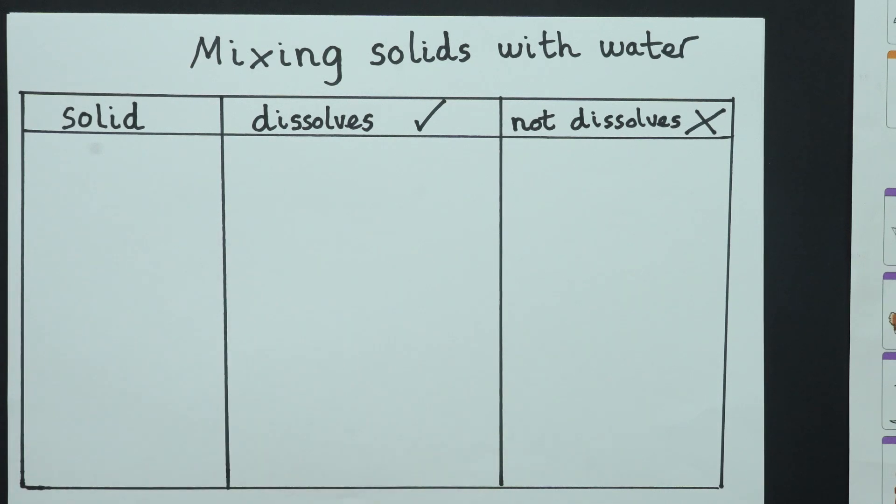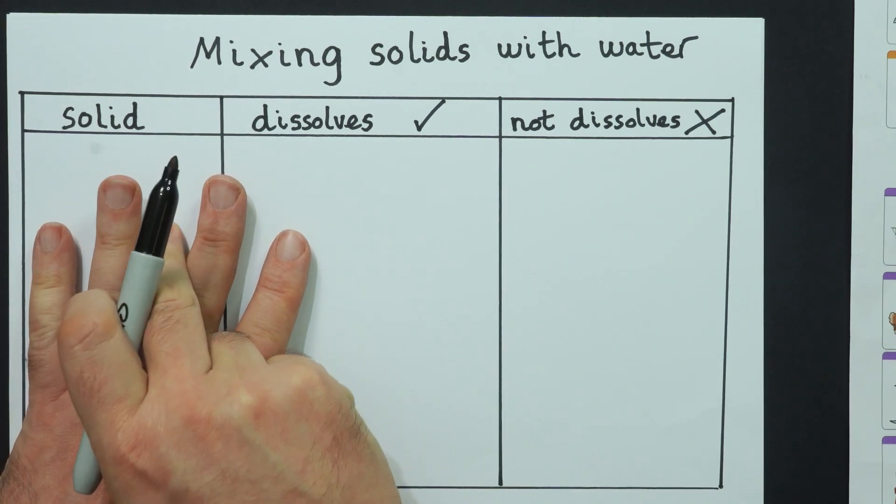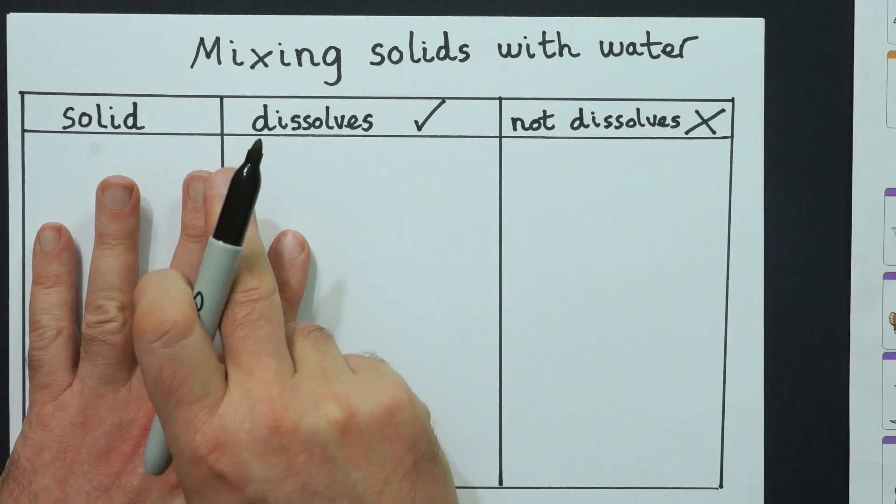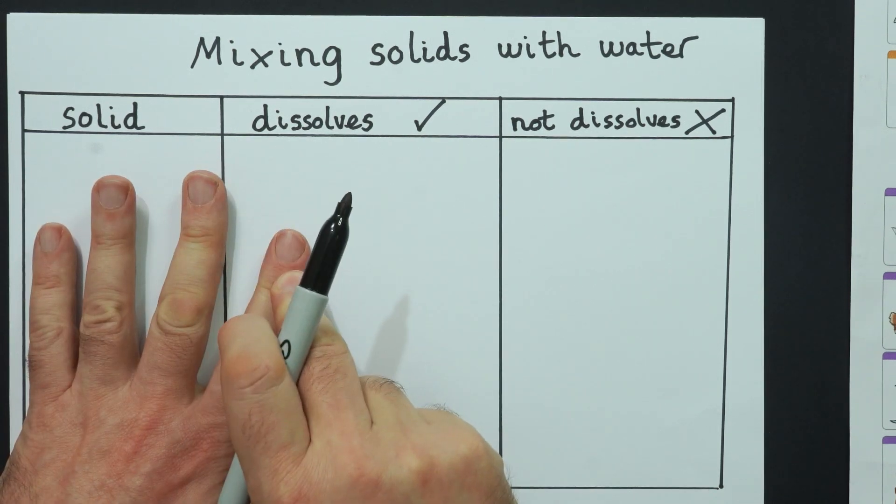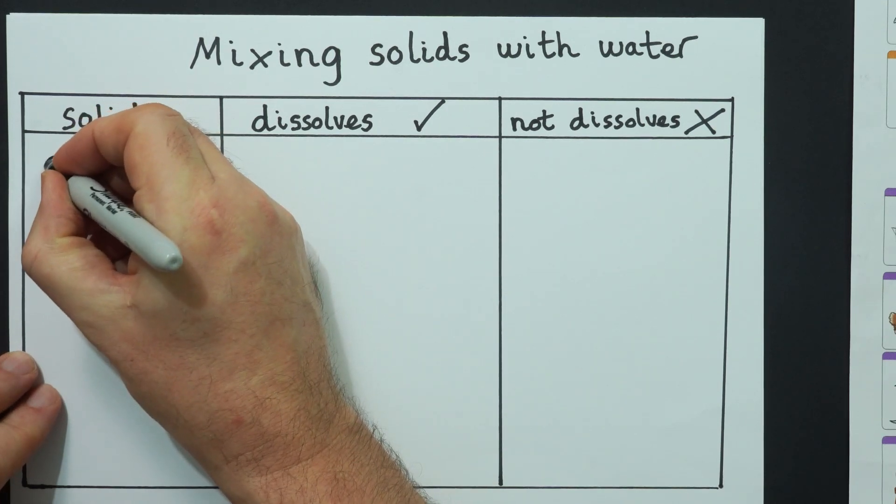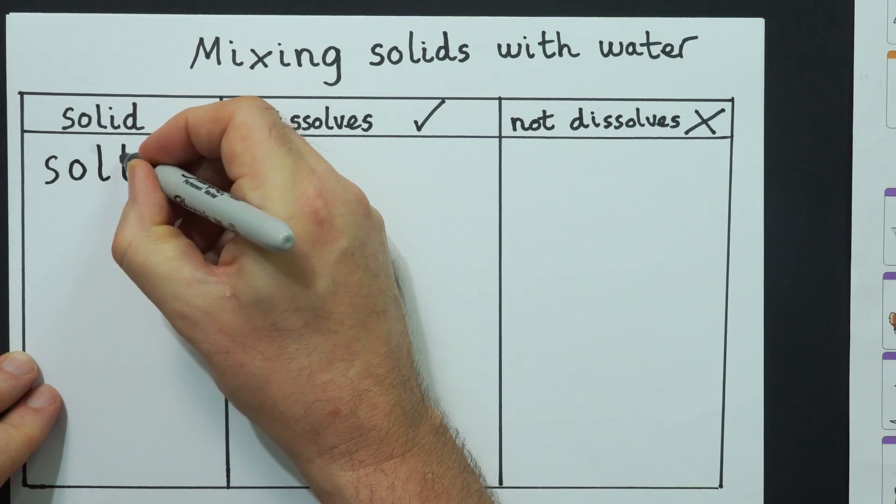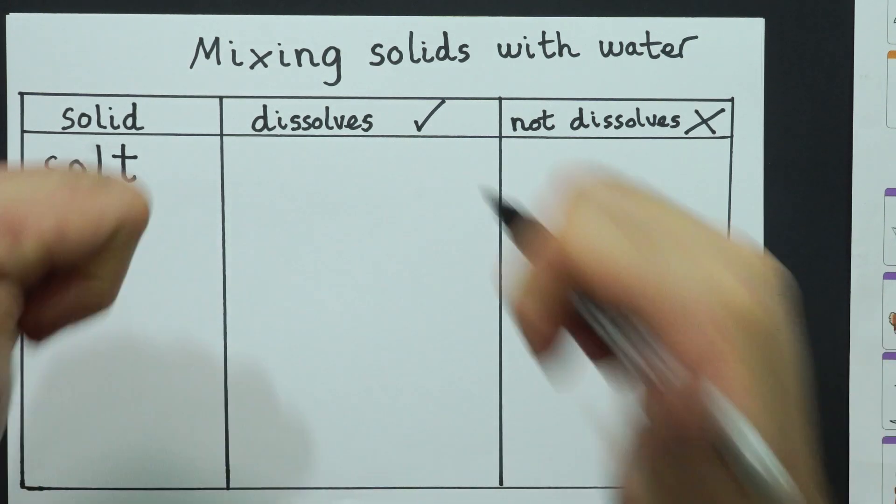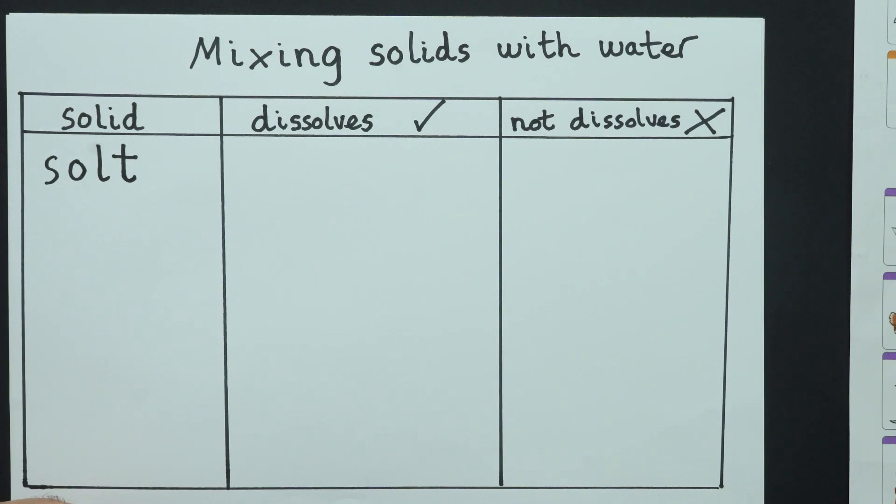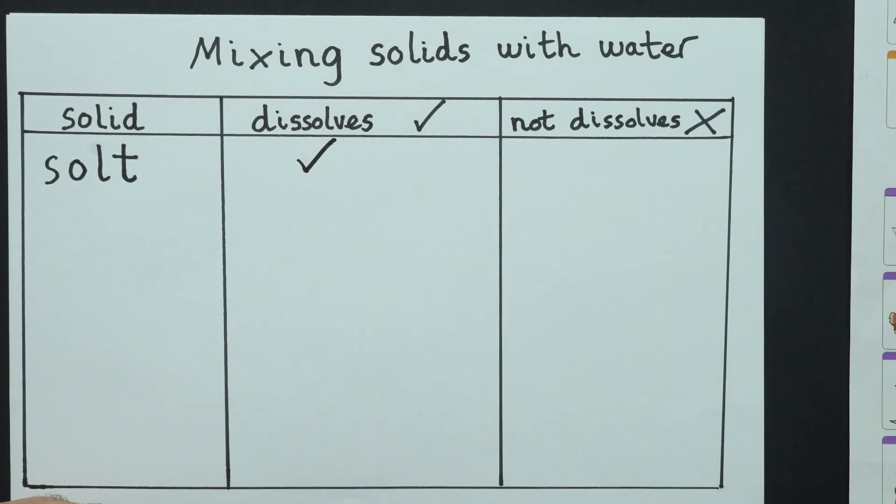Now, what was my first solid? It was salt. Can you sound out salt for me? Four sounds. What's the first sound? S-O-L-T. I'm going to write that down. S, O, L, T. So I'm writing phonetically. Dissolves or not dissolves? Well, that clearly dissolved, didn't it? You couldn't see any salt left at all, so we're going to give it a big tick.